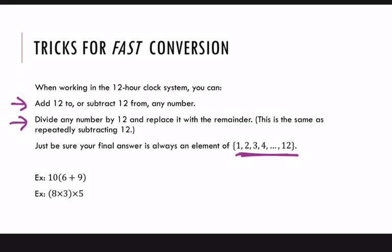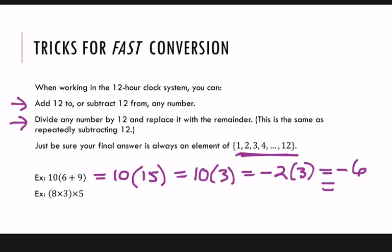We can also divide any number by 12 and replace it with the remainder. So we looked at doing that on a calculator. This is just the same thing as subtracting as many 12s as possible, so that's okay. And then what you want to do is just make sure that your final answer is always one of these elements in this set. So you can really have fun with this. For example, 10 times (6 + 9). So let me show you a couple ways to do this. One would be, start out until you get something that's not in the system. So 10 times (6 + 9). Well, 6 + 9 is 15. I can subtract 12 from that and make it 3. Now, I could multiply and get 30, but I could also subtract 12 from 10 and get negative 2. Negative 2 times 3 is negative 6. And then I can add 12 to that and get 6.